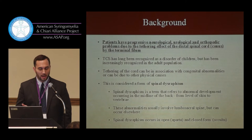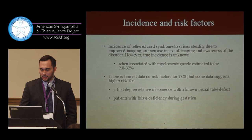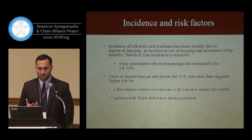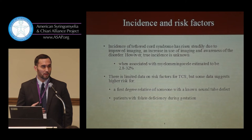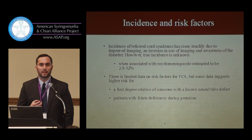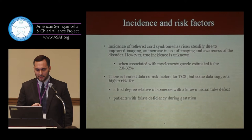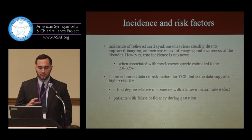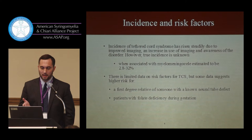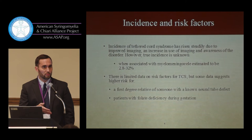The true incidence of tethered cord is not known, but it's becoming more evident because of better imaging and more awareness. A lot of the problem is that there are subtle findings on radiographs and images, so clinicians don't always know to look for it. In the pediatric literature, incidence associated with myelomeningocele ranges from 2.8 to 32 percent. Known risk factors include a first-degree relative with a neural tube defect or folate deficiency during gestation.